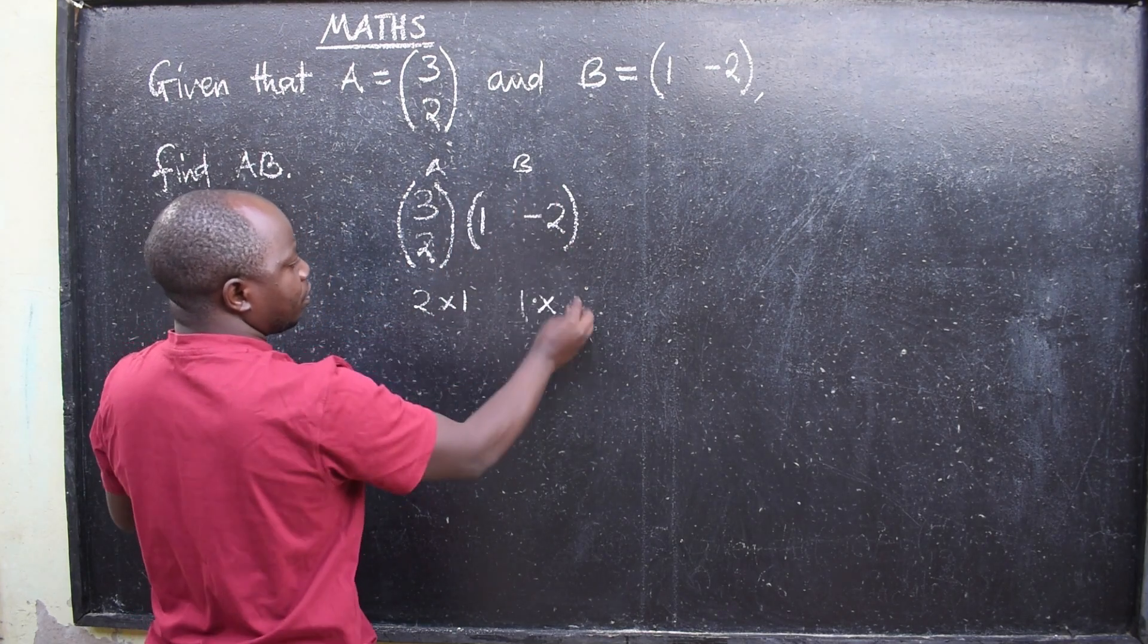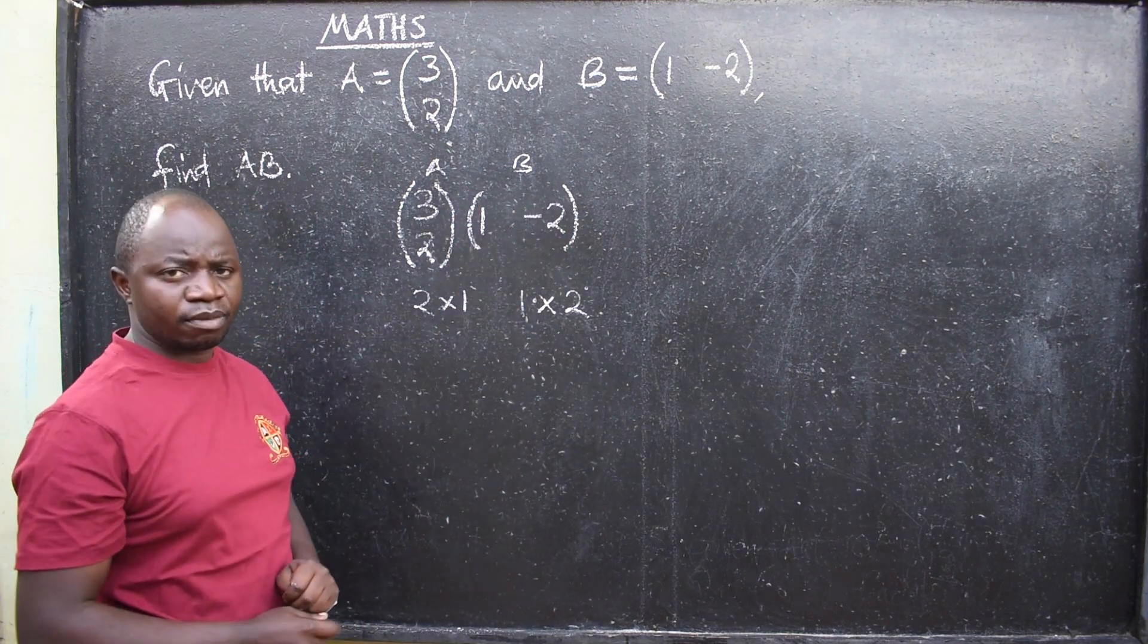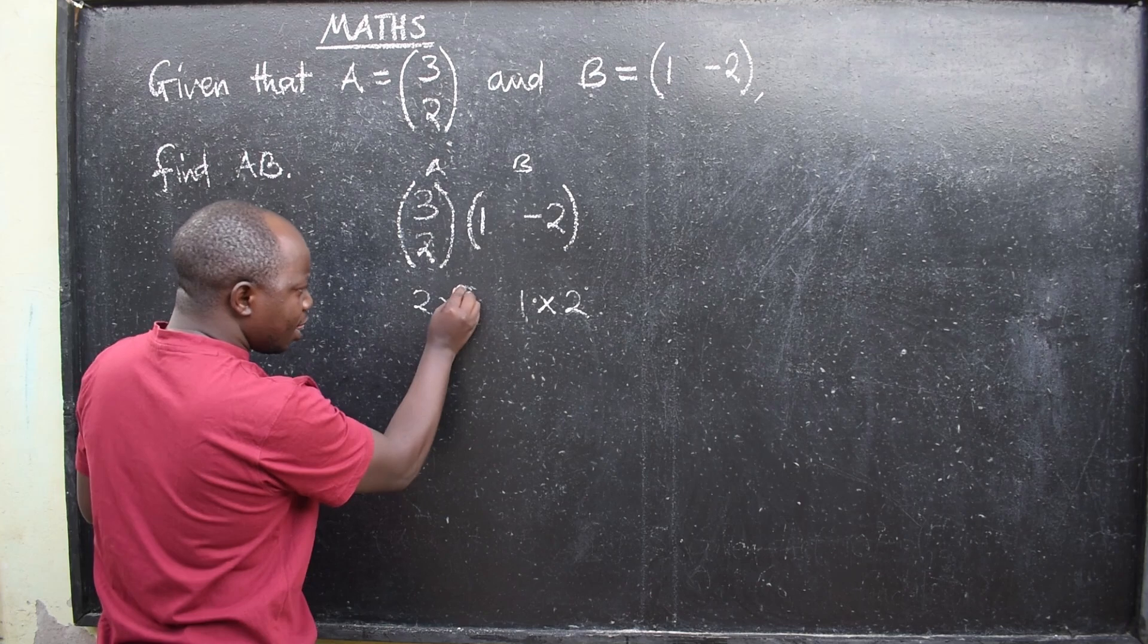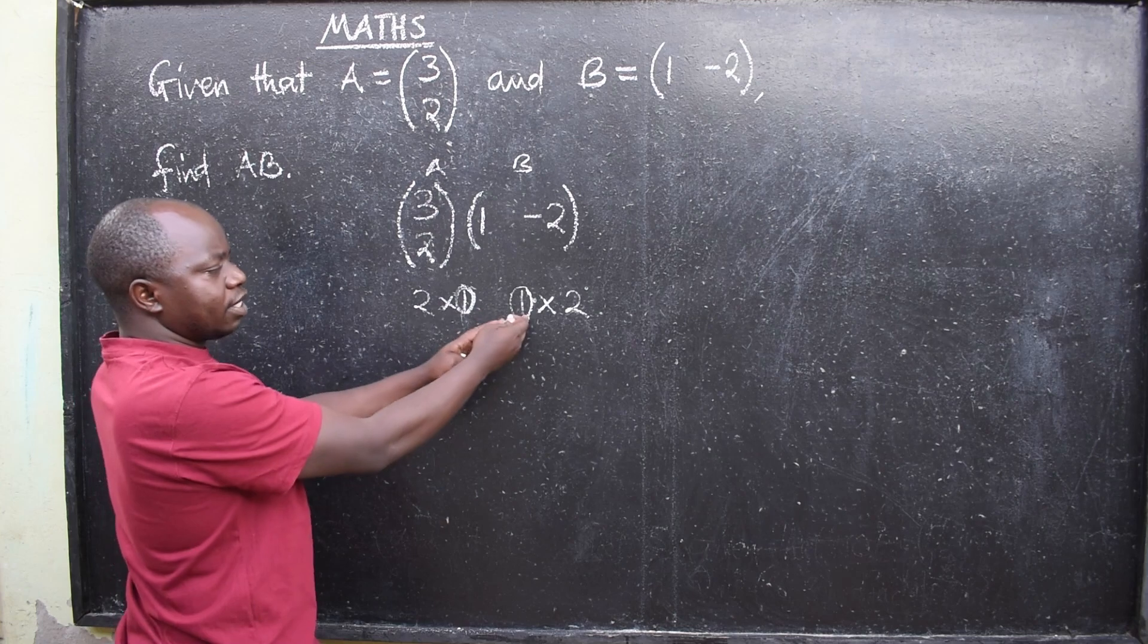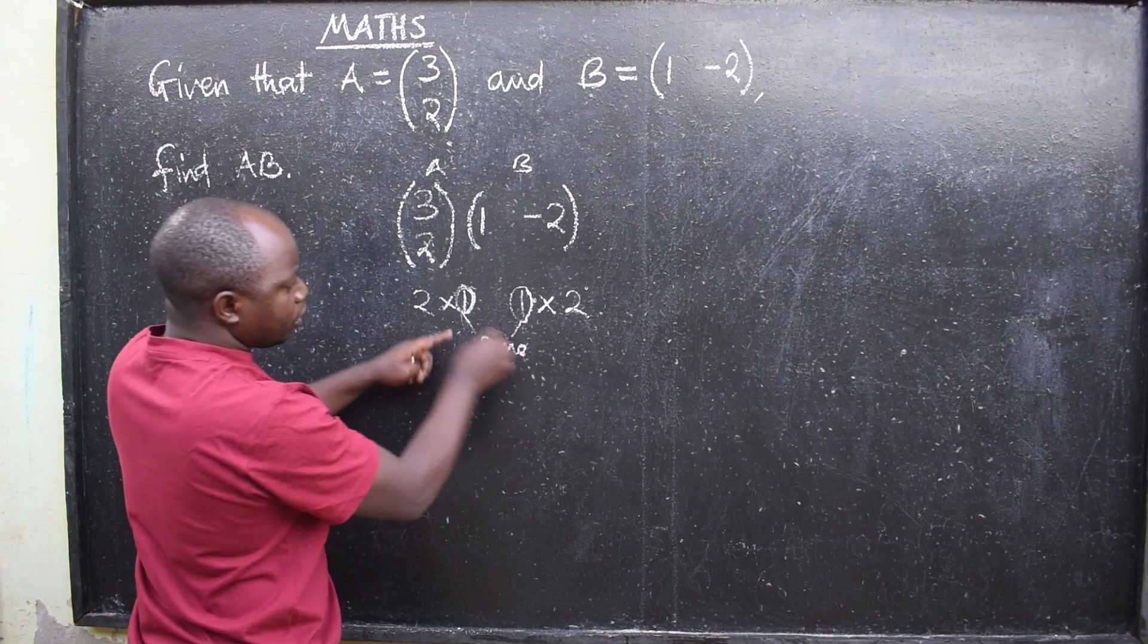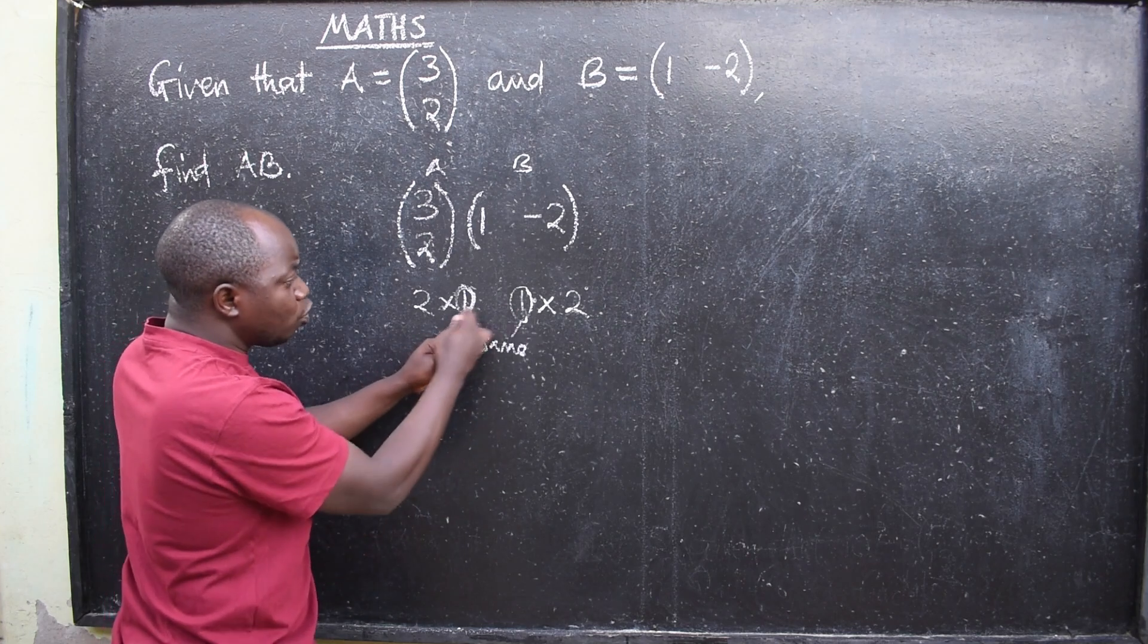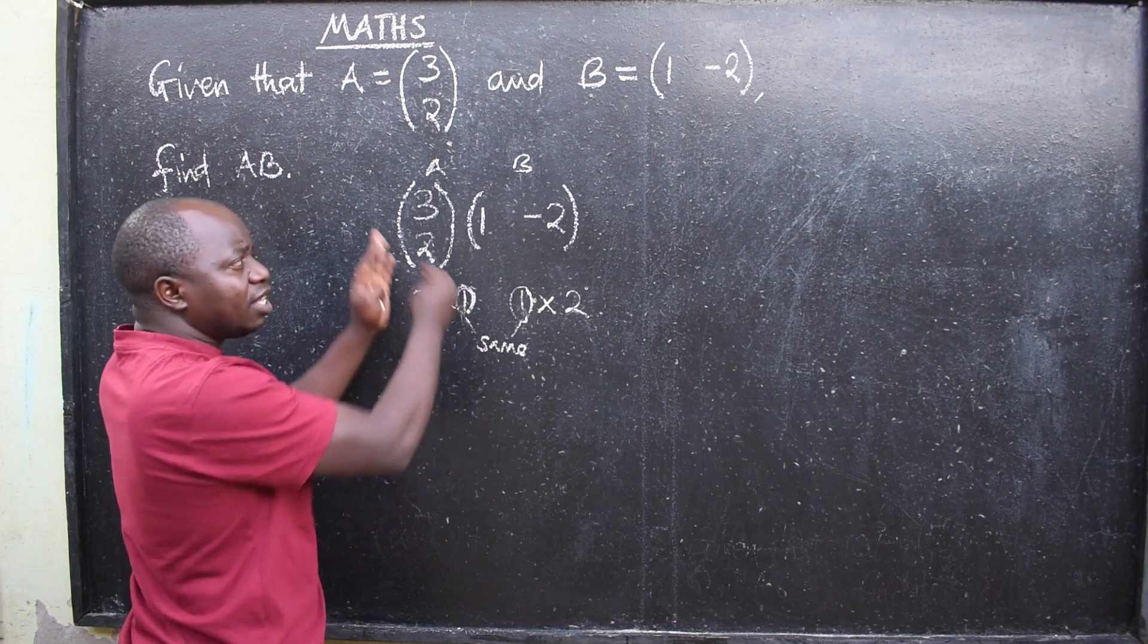Then for B, the order of matrix B is 1 by 2. Once you identify their orders, you will notice that this second number and the first number should always be the same from the first and the second matrix. You can see 1, 1 here. In other matrices you find 2, 2, 3, 3, just like that. But these should always be the same.